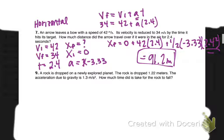Let's move on to number 9. It says a rock is dropped on a newly explored planet. The rock dropped 1.22 meters. The acceleration due to gravity on this particular planet is 1.3 meters per second squared. How much time did it take for the rock to fall?